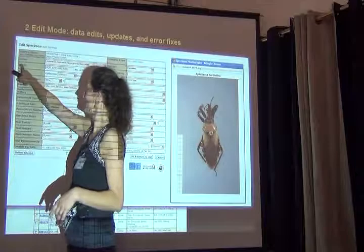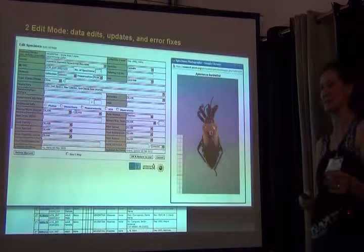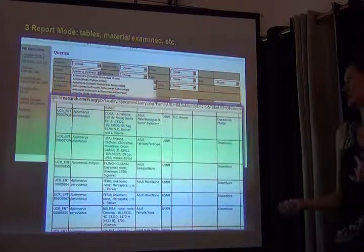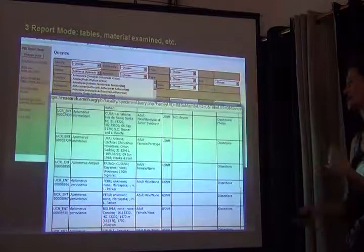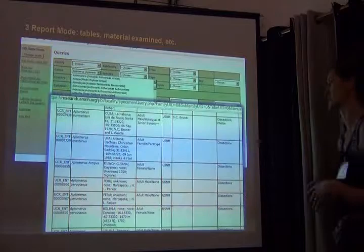You also see that whenever we have a little photo icon with a specimen, that means we have an image for that specimen as well — we'll talk about things like that later on. Then there's a third mode, and this is really where you write queries and reports, and also where you get all the specimen data out of the database for research purposes.